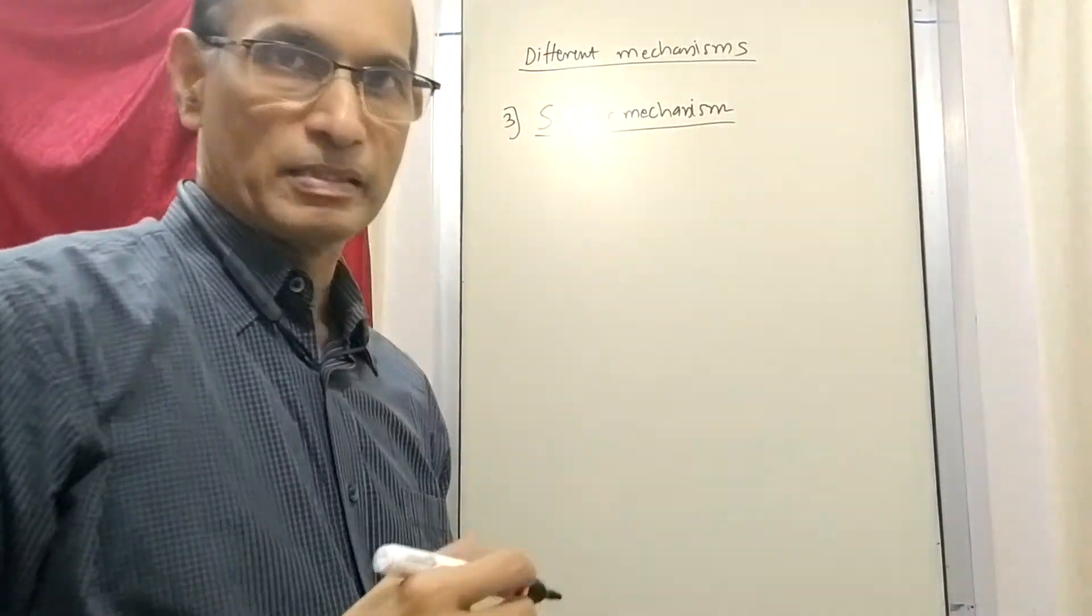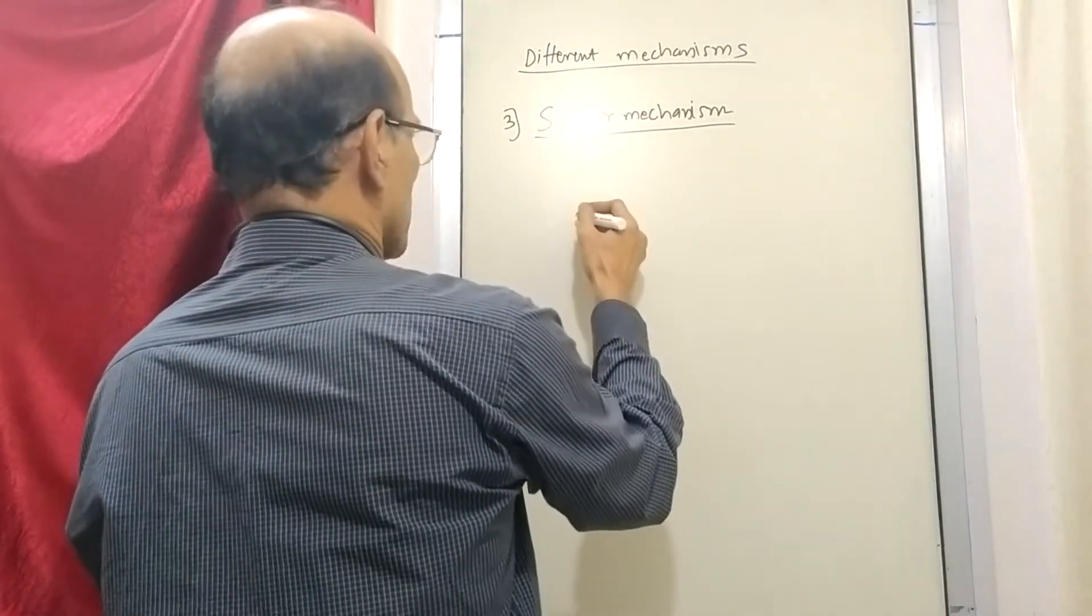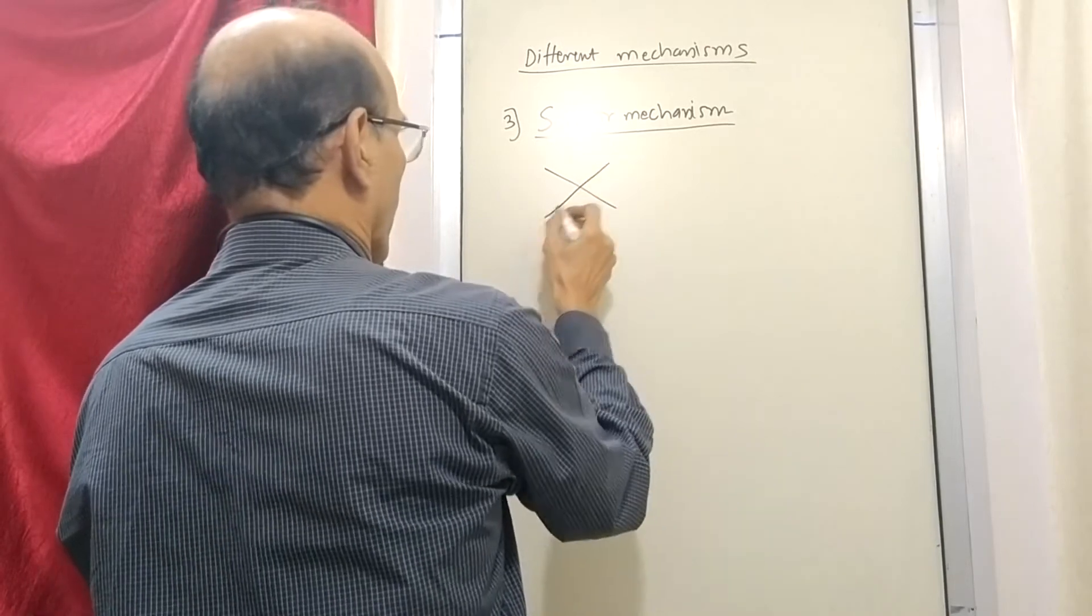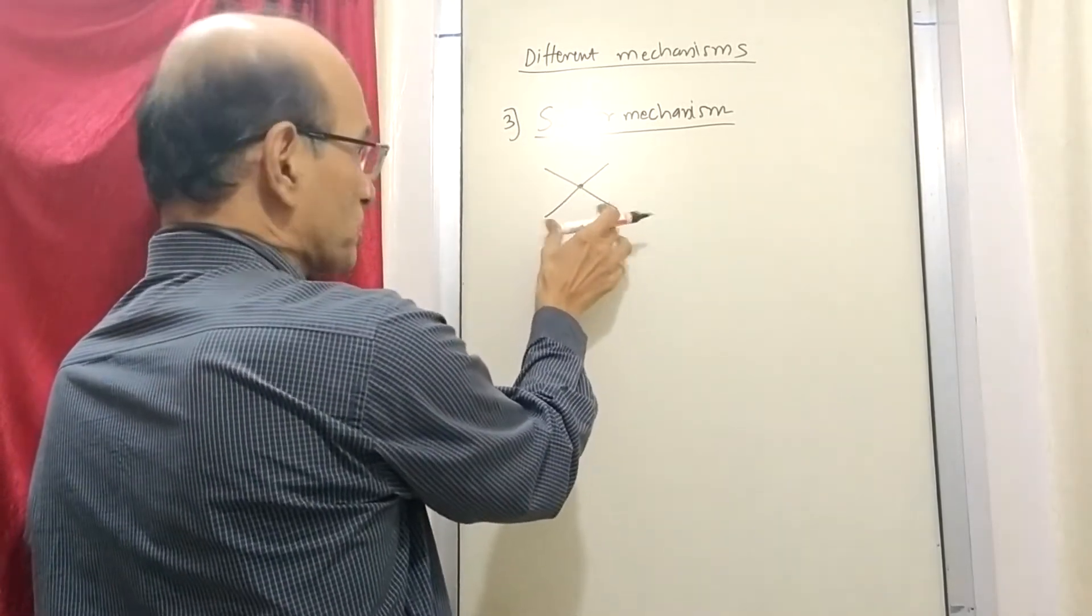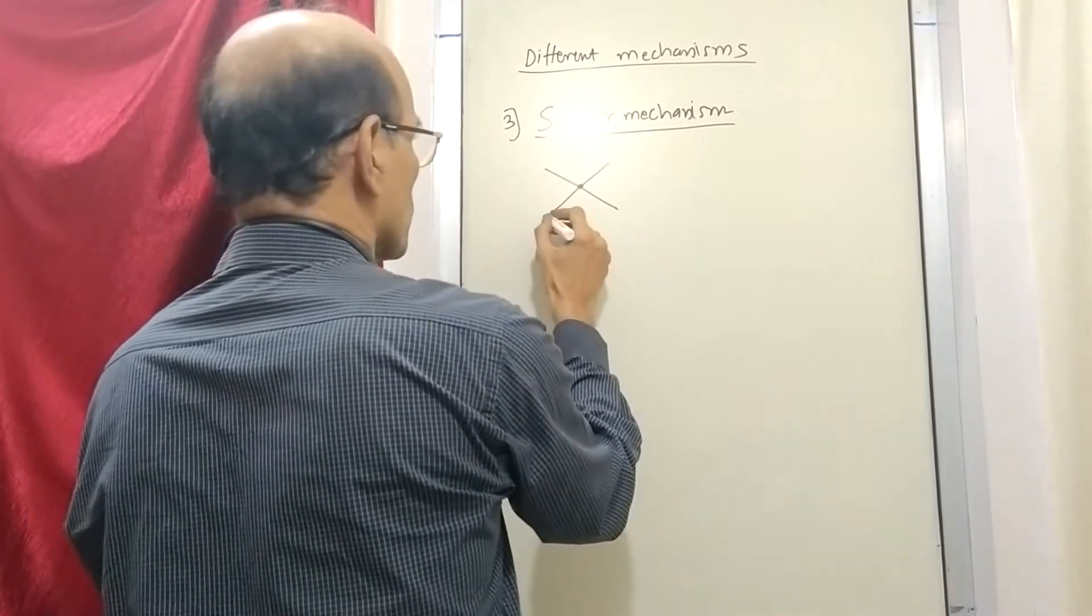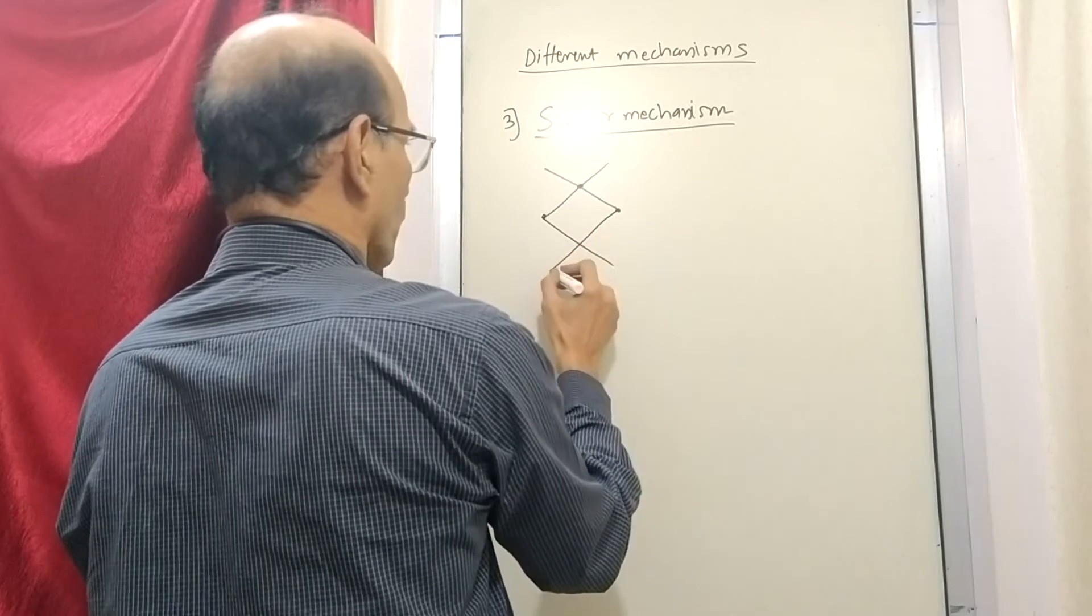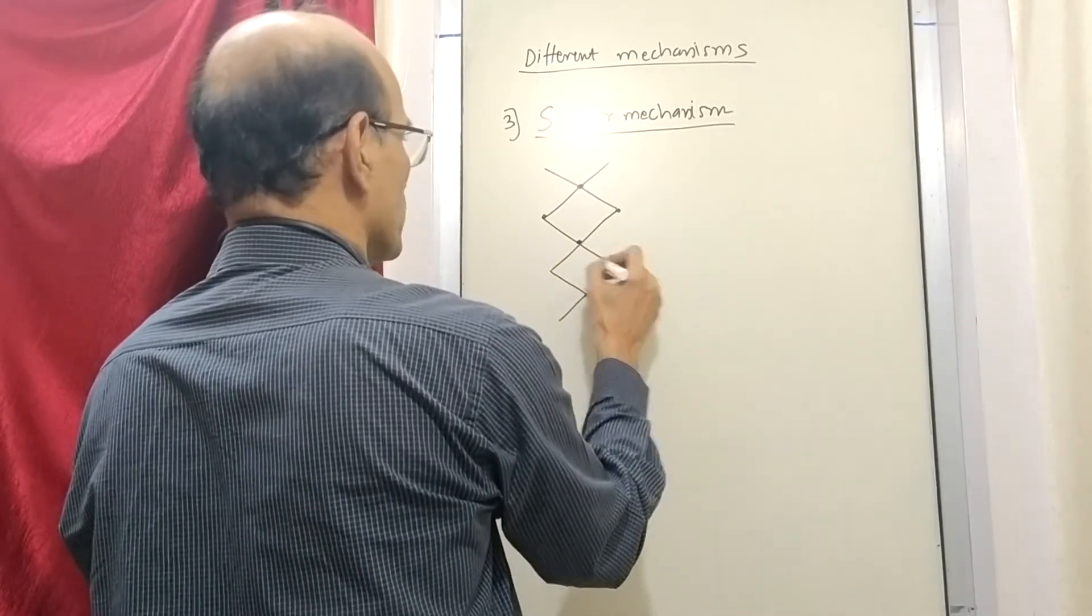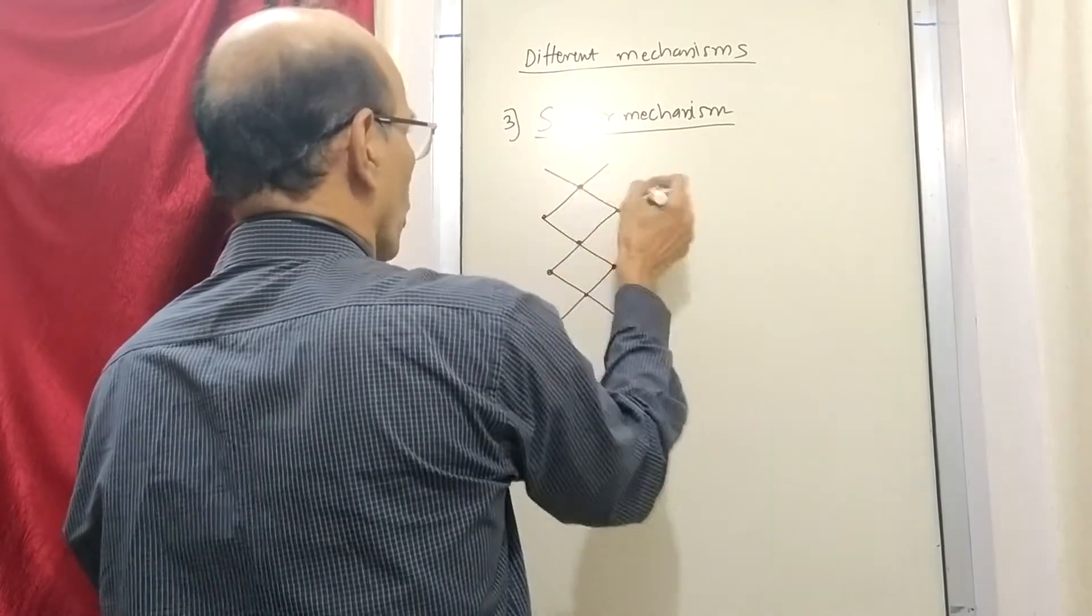Scissor mechanism. Now this is again you must have seen it somewhere. So as you know this is a scissor. When you press from here the other end also moves. So this is made use of for forming a mechanism like this. You know joints at all these places.